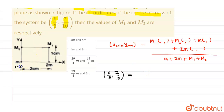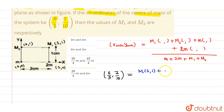The coordinates of m are (0, 0) because this is the origin. For 2m, the coordinates are (2, 0). For M2, the coordinates are (0, 1), and for M1, the coordinates are (2, 1). Substituting all the values, we get M1 into (2, 1) plus M2 into (0, 1) plus small m into (0, 0) plus 2m into (2, 0).